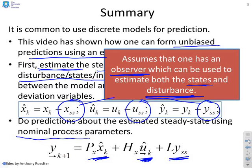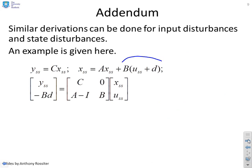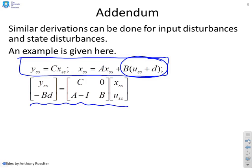Now just an addendum for those who might want to look at it. What if the disturbance isn't an output disturbance, it's some other form of disturbance? So here for example, I've said what if you have an input disturbance? Well your consistency equations are slightly different and therefore the way you solve for x_ss, u_ss and y_ss is slightly different. But the principles are the same.